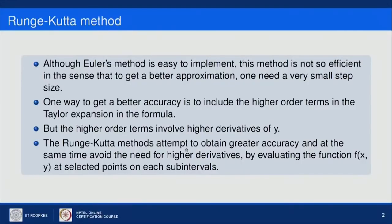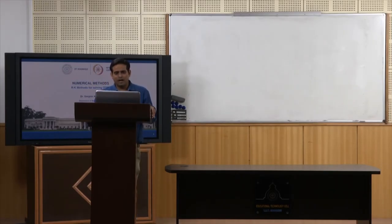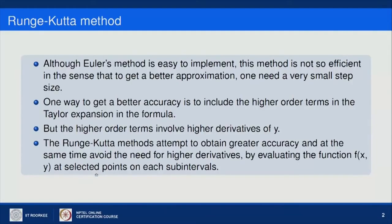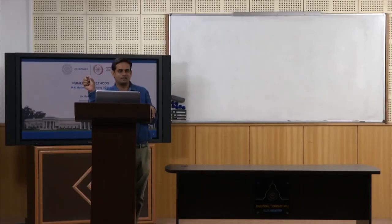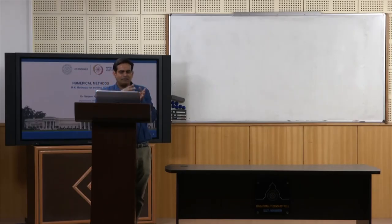In RK methods we attempt to obtain greater accuracy and at the same time avoid the need to calculate higher derivatives or use a smaller step size. How we can do it? We will evaluate the function f(x, y) at some selected points on each subinterval, rather than only at the initial and last point as in simple Euler or Taylor method.